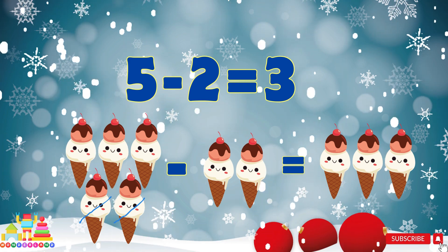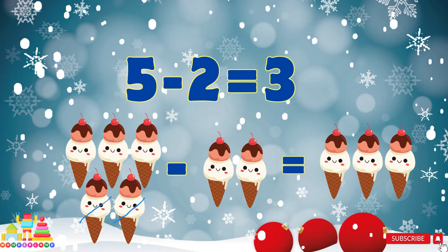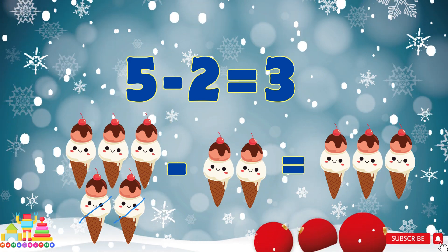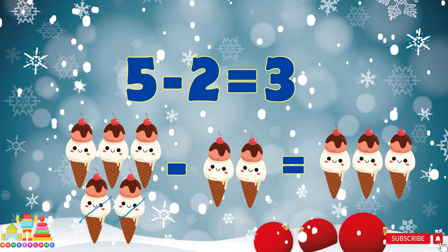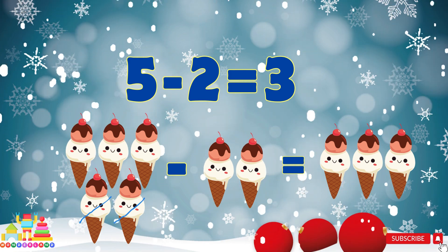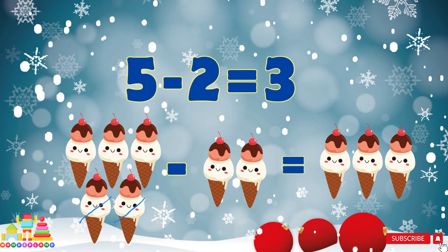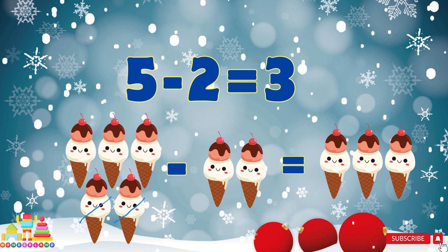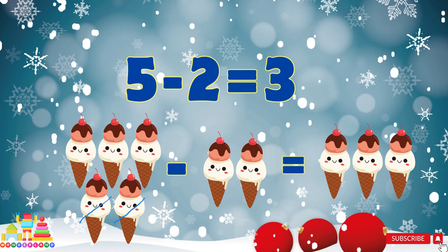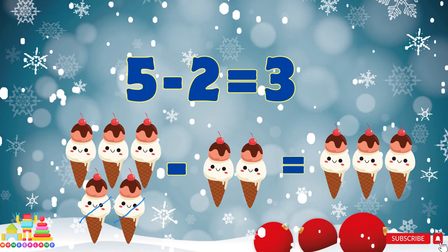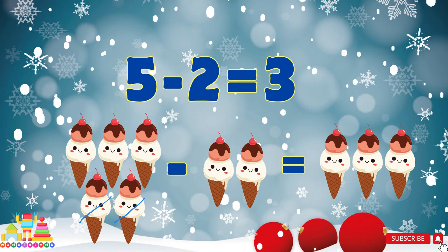Five minus two equals three. Subtract two ice creams from five ice creams, left only three ice creams. One, two, three, four, five — cut down two ice creams, left three ice creams. One, two, three.